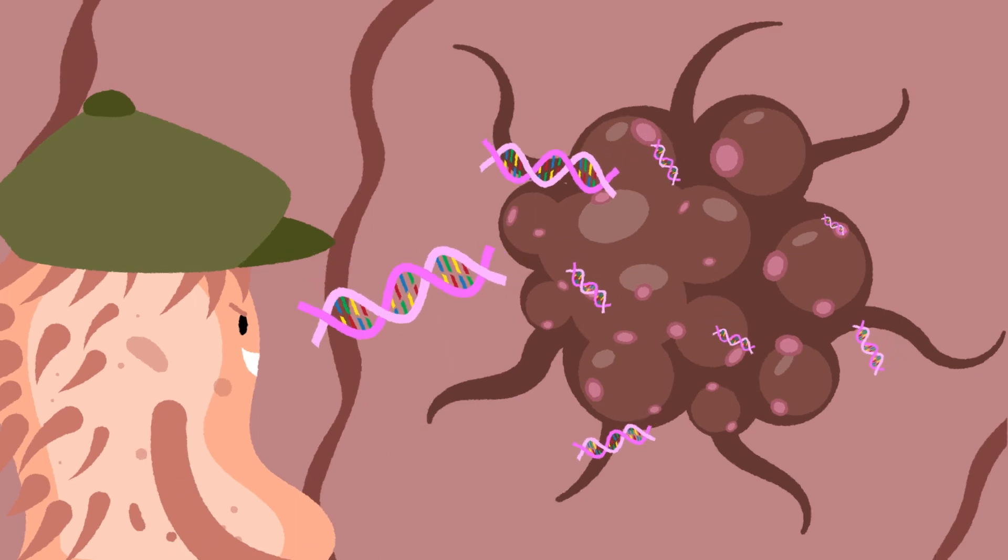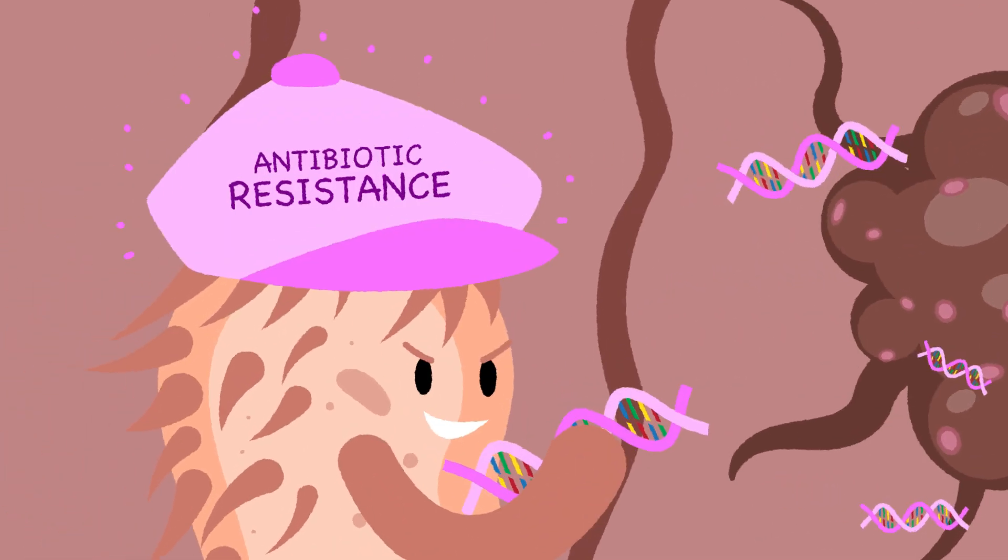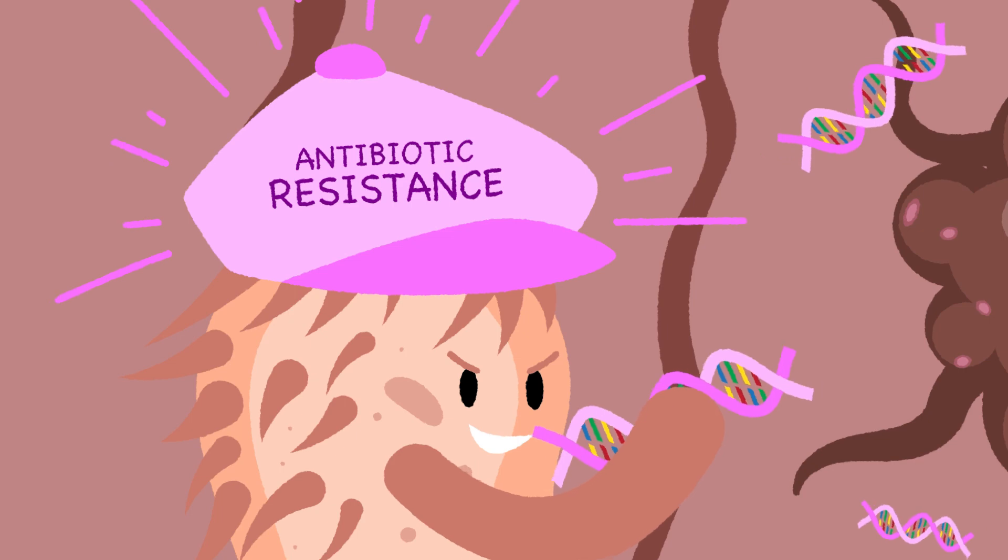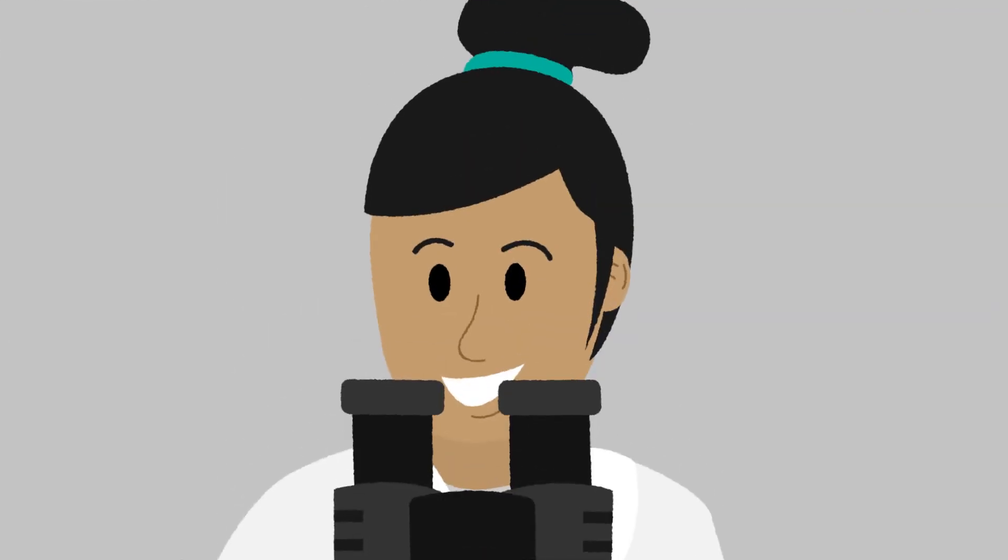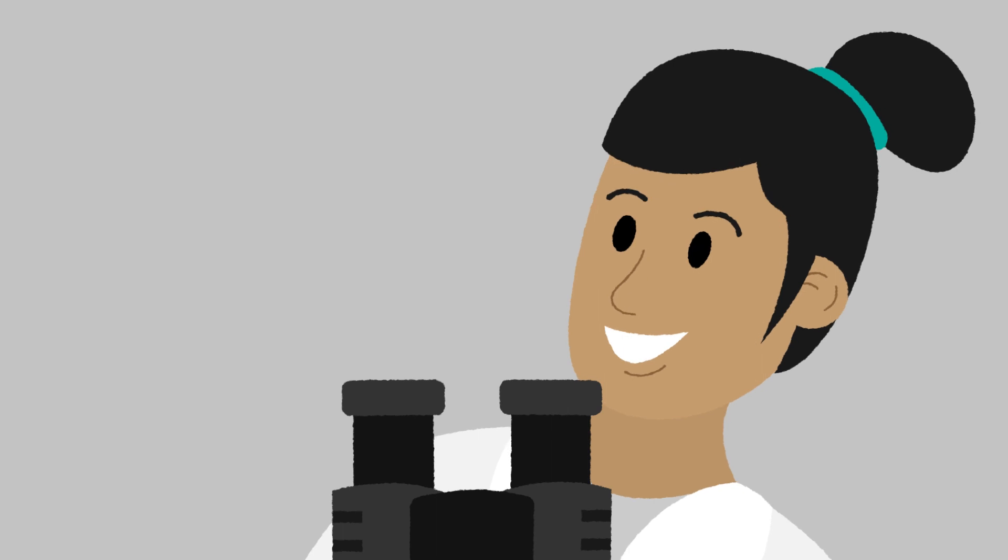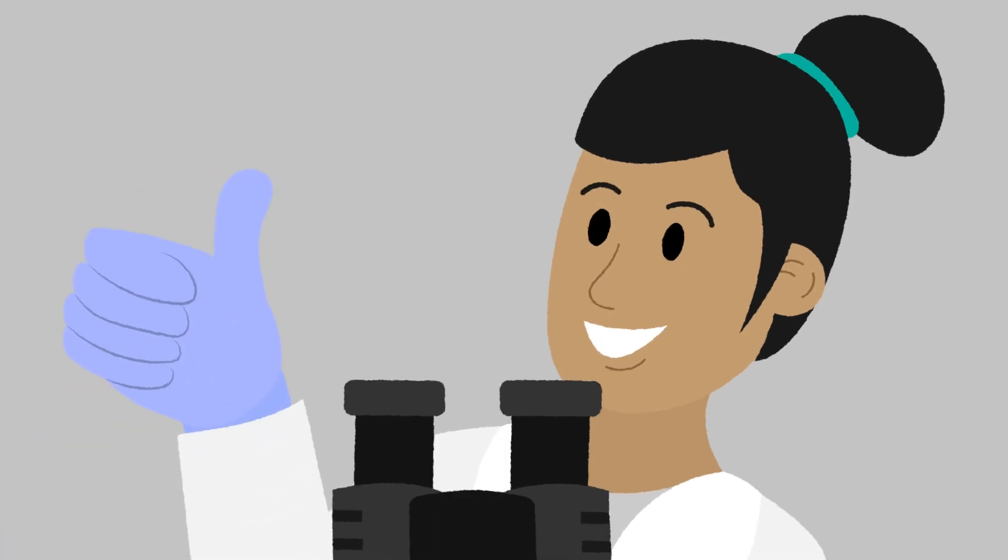If A. bailei found any tumor DNA, it would then turn on a linked antibiotic resistance gene. This tells us that the CATCH was successful and that cancerous tissue was found.